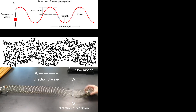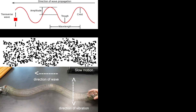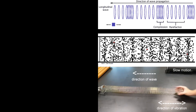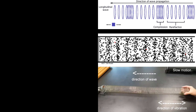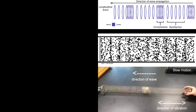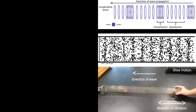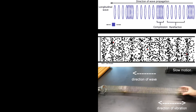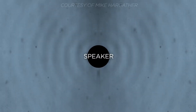In a transverse wave, the material is oscillating perpendicular to the direction of wave propagation, creating crests and troughs. In a longitudinal wave, the material is oscillating parallel to the direction of wave propagation, creating compressions, which are areas of increased density, and rarefactions, which are areas of decreased density. A sound wave is an example of a longitudinal wave.